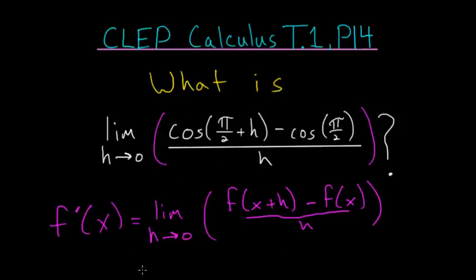And if we just directly compare these two expressions, we can notice that our function is simply the cosine of x and the specific x value that we're evaluating this at is pi over 2.